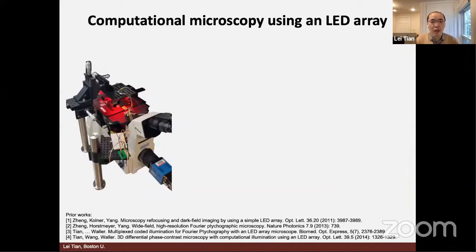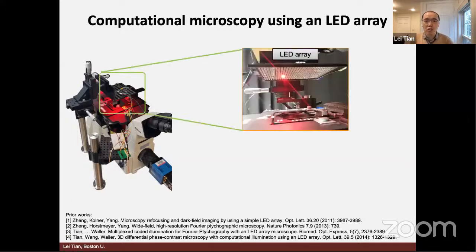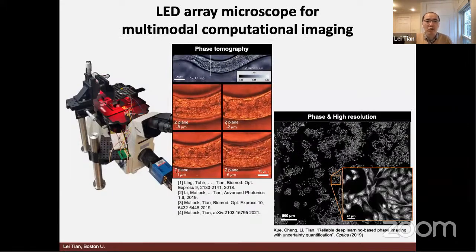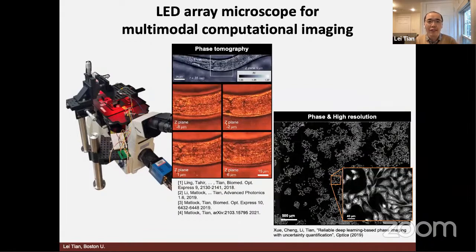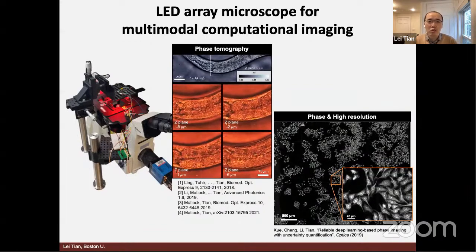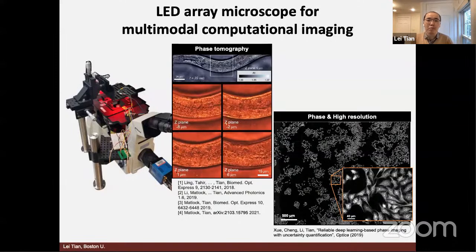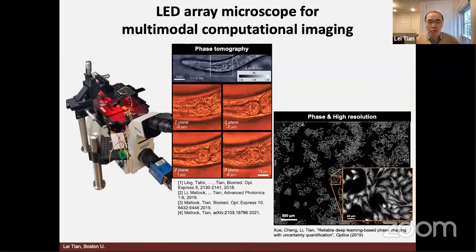This is known as LED Array Microscope. It's approximately 10 years old since its invention. What it is: you start with a standard microscope, then replace the illumination unit — which typically is a lamp — with a programmable LED array. This allows you to turn on any arbitrary illumination patterns, either one or some pattern illuminations. Since I joined BU, we have been primarily working on two different imaging modalities: one is for 3D phase imaging or phase tomography, and the other for high-throughput cellular microscopy.